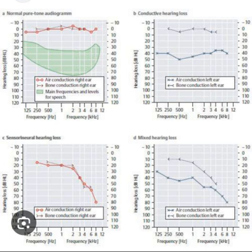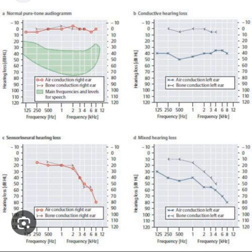In sensorineural hearing loss, the hearing loss occurs due to damage to the inner ear and CNS higher auditory pathways, and tends to be permanent but may be reversible in some situations. On an audiogram, pure SNHL is indicated by overlapping air conduction and bone conduction lines without any air-bone gaps greater than 10 dB HL. SNHL may occur with presbycusis, noise exposure, infection, Meniere's disease, aminoglycoside toxicity, and vestibular schwannoma, among others.